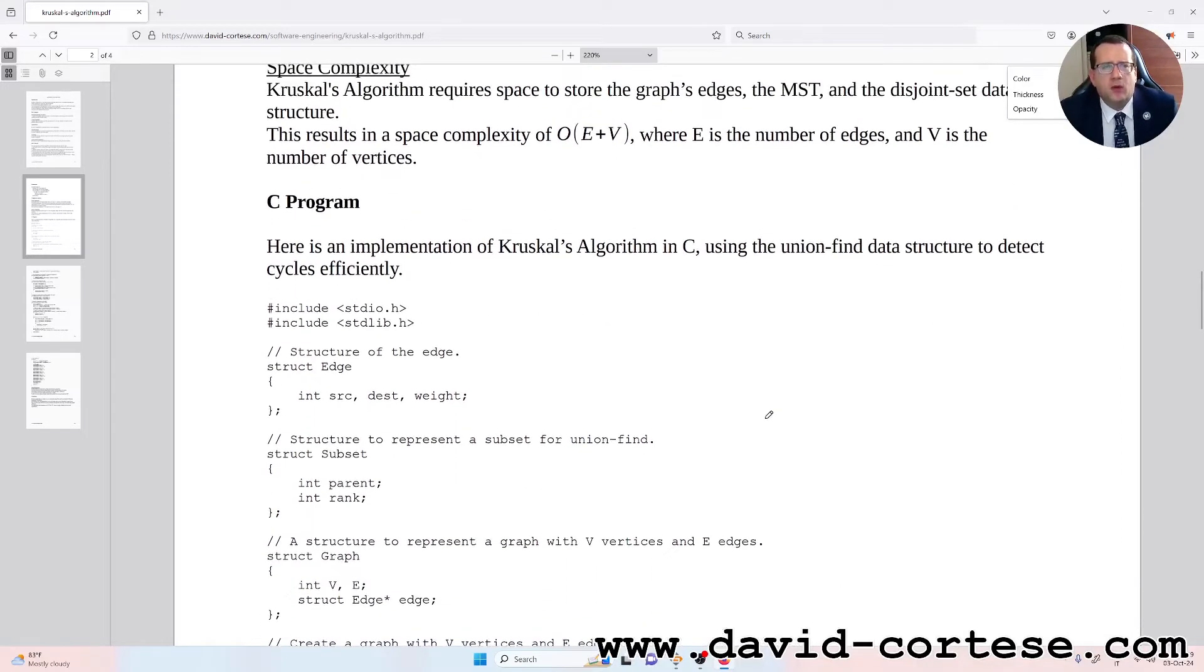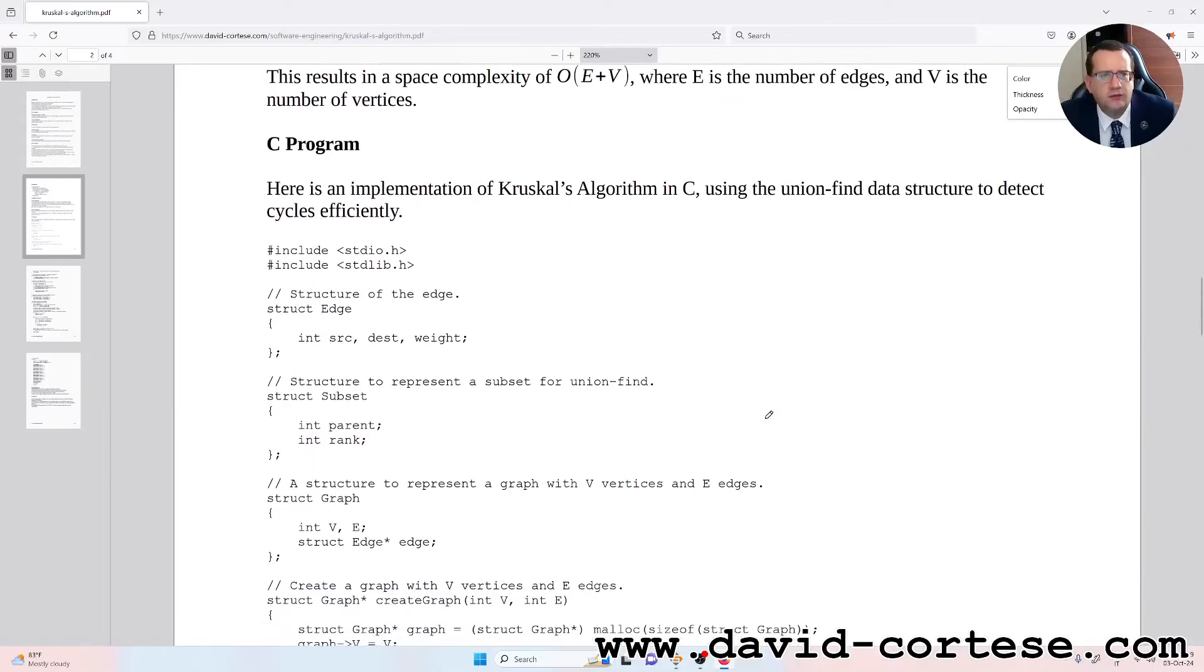C program. Here is an implementation of Kruskal's algorithm in C using the union-find data structure to detect cycles efficiently. So as you can read, here you can find the structure of the edge.